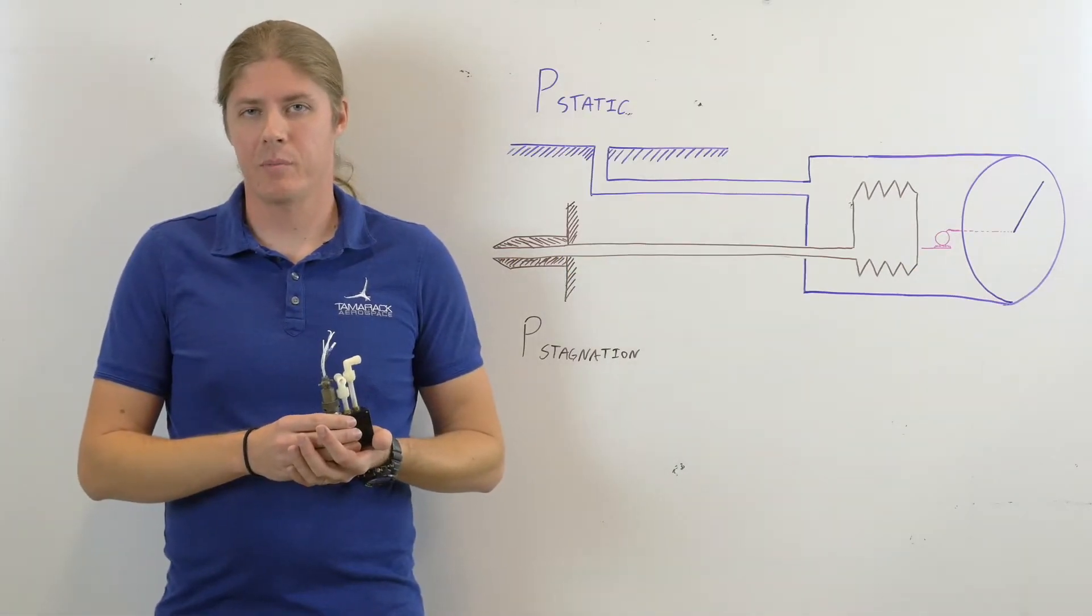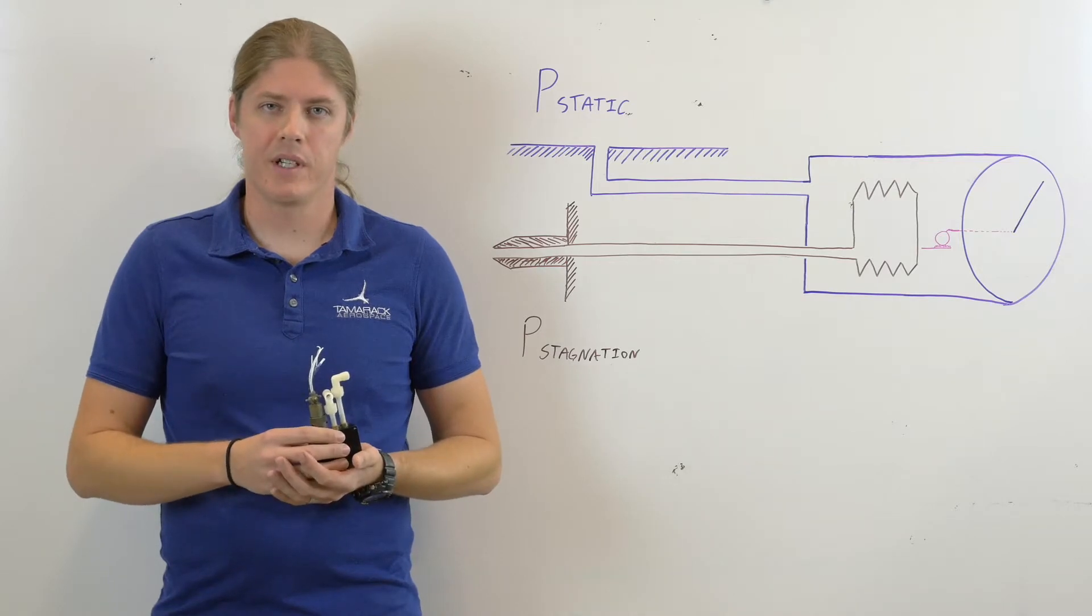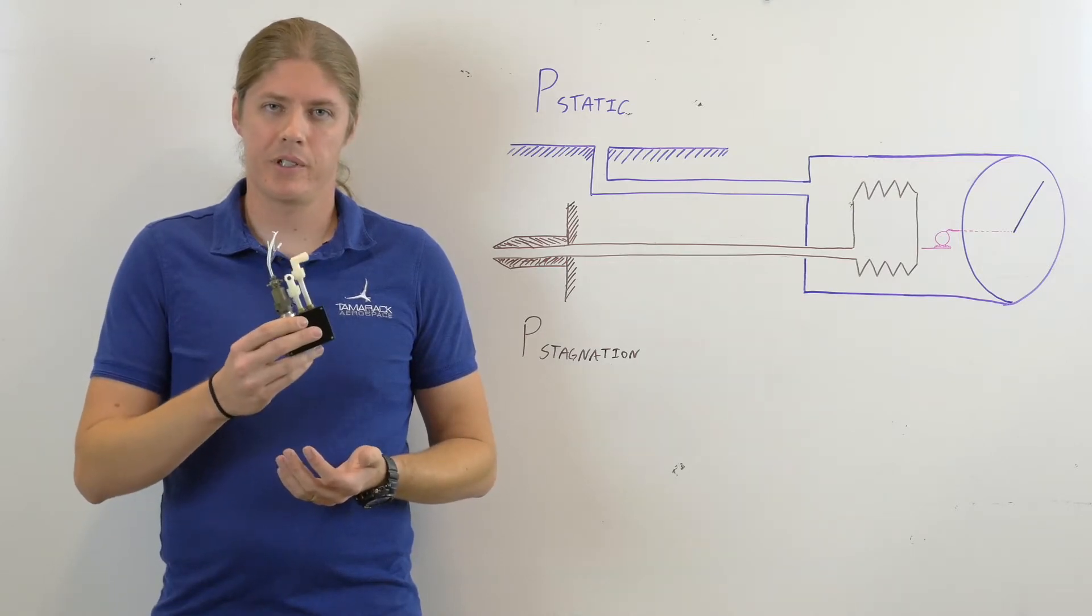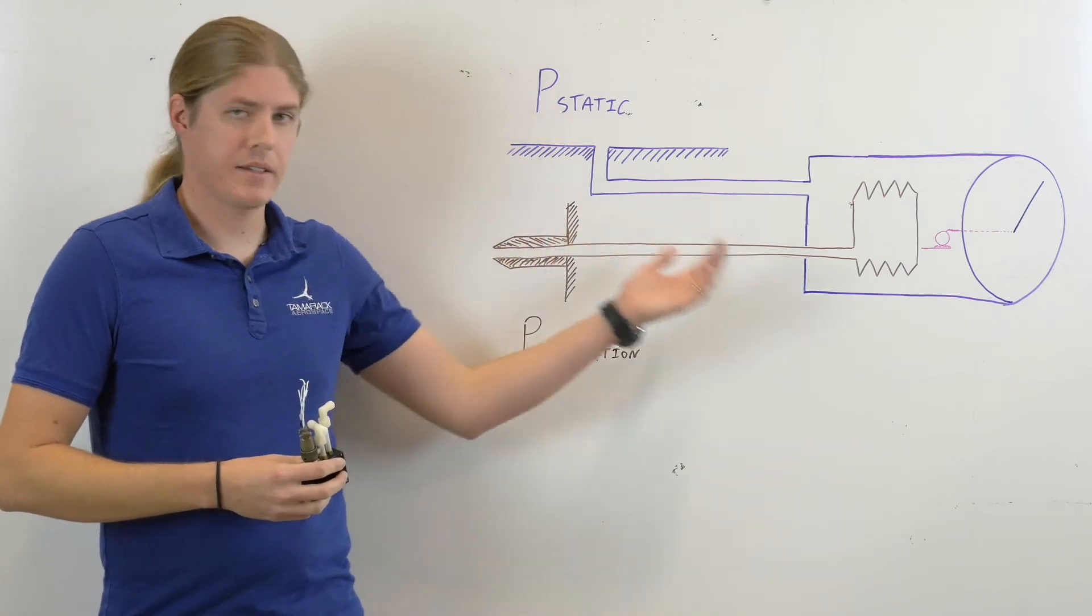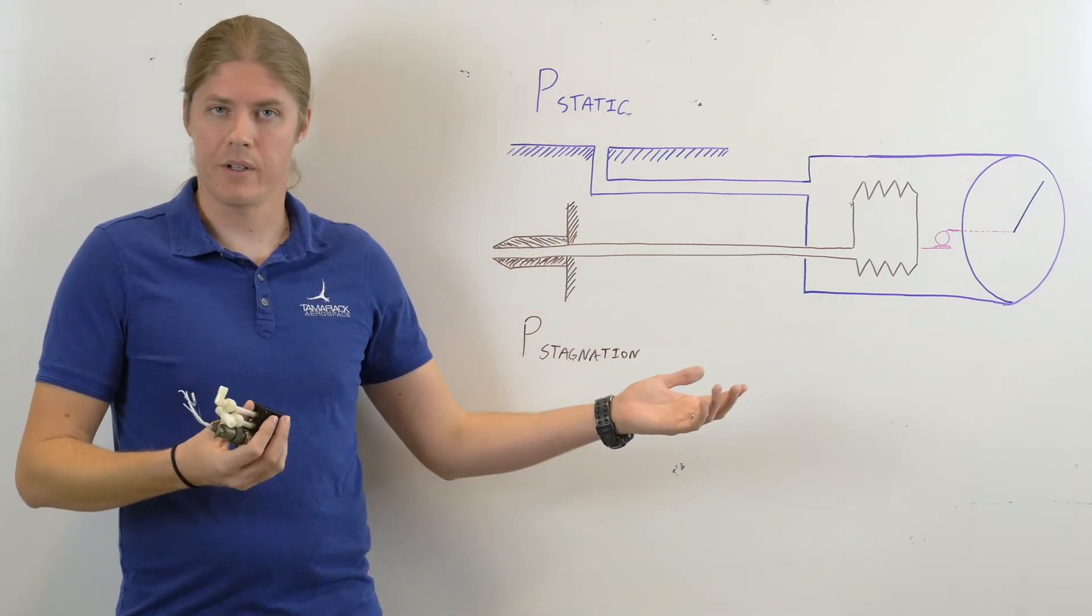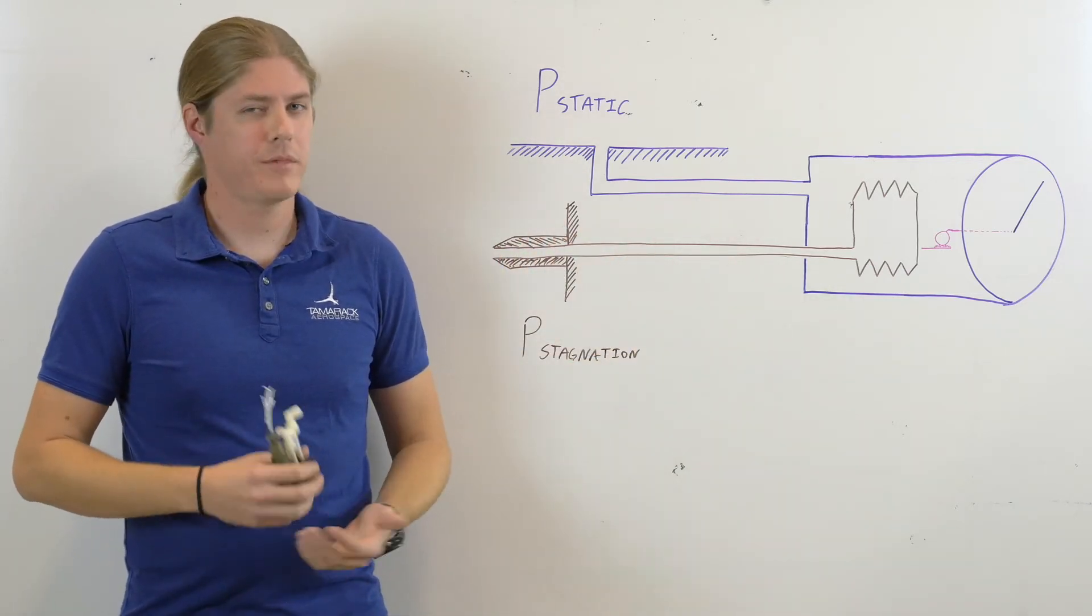Most modern aircraft with glass cockpits, and all of our flight test instrumentation, use an electronic differential pressure transducer like this. But you can still find this setup because it's extremely accurate, and it's extremely reliable. It's a perfect backup.